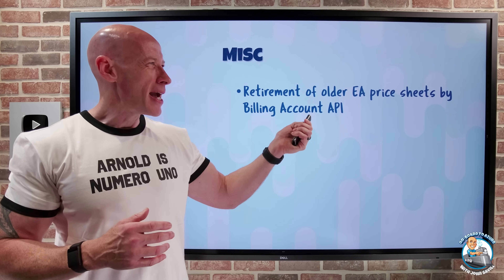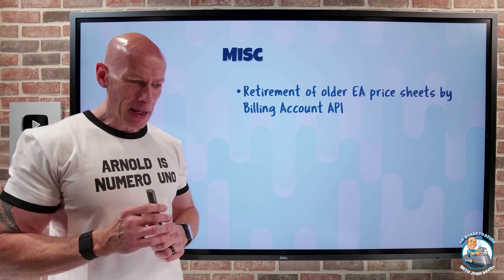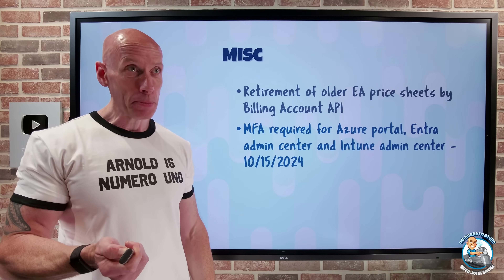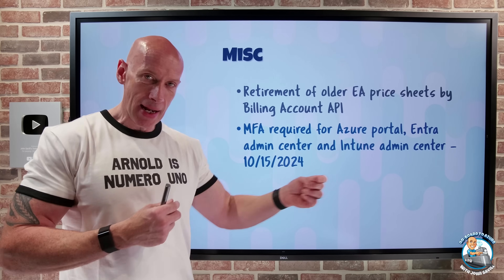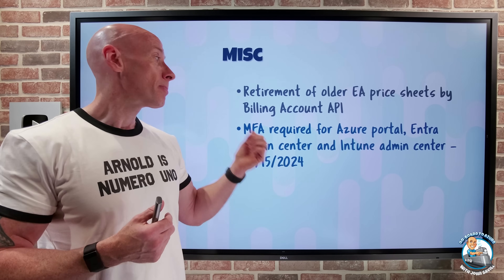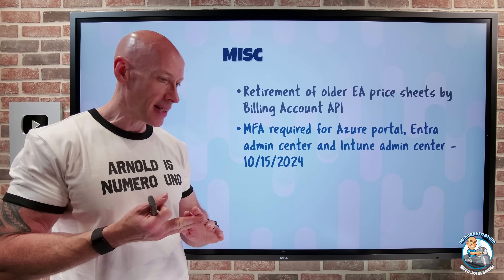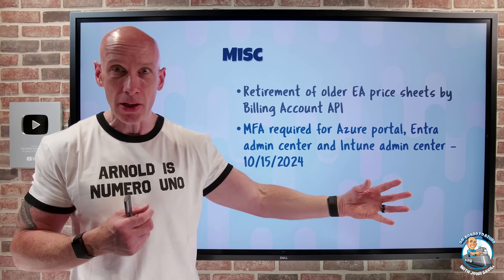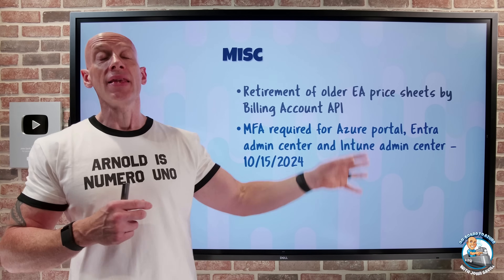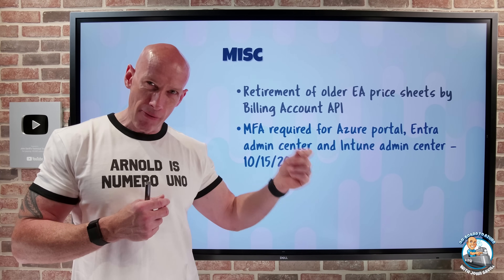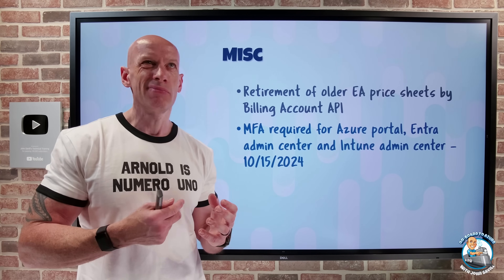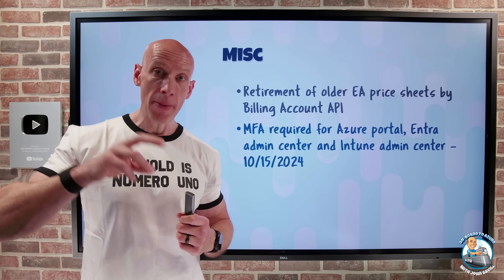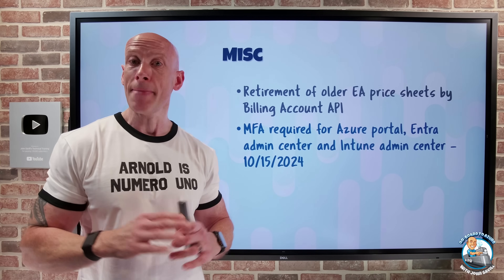On the miscellaneous side: the older EA price sheet using the billing account API needs to migrate to the 2023-11-01 API version and use the enhanced price sheet. And don't forget that phase one of the MFA requirement is rolling out to tenants on the 15th of October. Within the next few days, Azure Portal, the Entra Admin Center, and the Intune Admin Center will require MFA to access the portals. This does not mean you need MFA to access an app hosted on Azure — it's when interacting with those portals specifically. Phase two in 2025 will add MFA requirements to the Azure CLI, Azure PowerShell, and Azure Mobile Apps, as well as infrastructure as code deployments. It does not apply to service principals or managed identities.